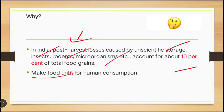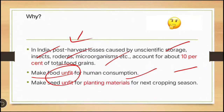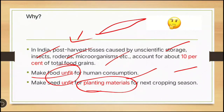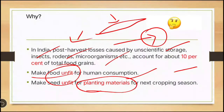If insects or pests attack stored grain, they make the stored food unfit for human consumption. They also make seed unfit for planting. For example, if this is paddy or a whole grain pulse and insects are eating the cotyledon or the embryo, then they are making the seed unfit as planting material.